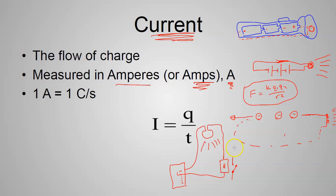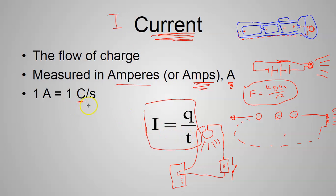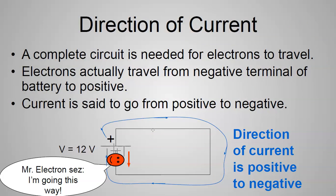The formula for current: I equals Q divided by t — current equals charge divided by time. The units work out: coulombs divided by seconds gives one amp of current.